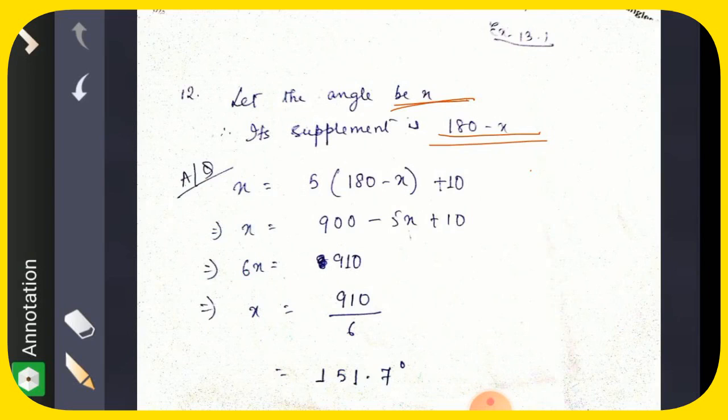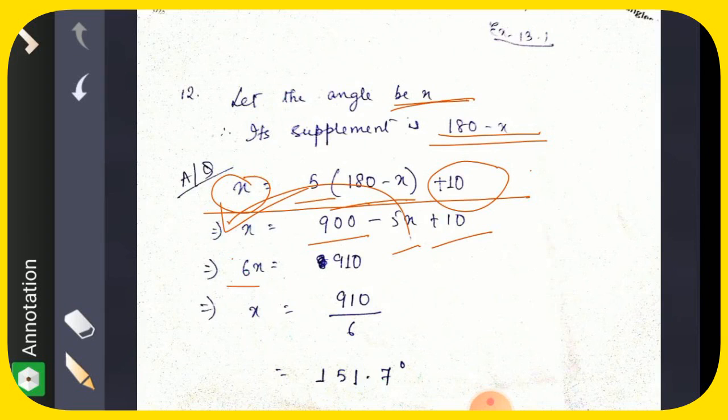So this angle is 5 times the supplement then 10 degrees more than this, so this is the equation. Now you just solve it: 5 times 180 is 900 minus 5x plus 10. If 5 goes this side, 5x plus x is 6x, 900 plus 10 is 910. Our x equals 151.67.